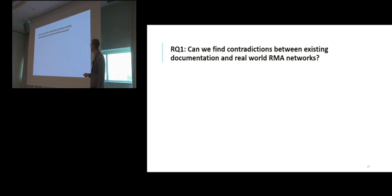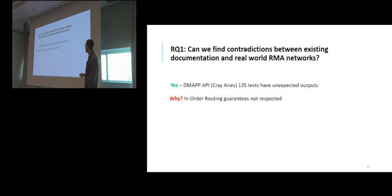The first research question we ask is, can we identify contradictions between the existing documentation of libraries and the actual behaviors of RMA networks using our framework? And the answer is yes. For 135 tests, we observe on the actual outputs results that we did not get by using our coreRMA rules. We identified the reason is that even if we enable the in-order routing, still this one was not enforced by the network. One example test is actually the running example I've shown before, for which we obtain all four possible outputs even if we enable the in-order routing, and there we should expect only two.